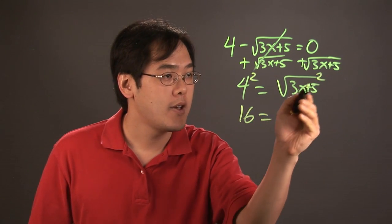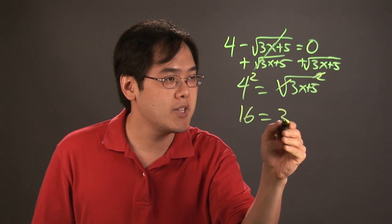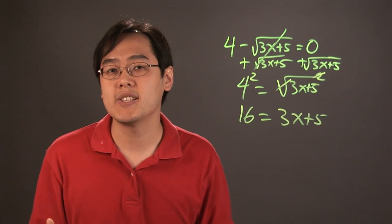4 squared is 16, square root of 3x plus 5 squared. The radical and the square cancel, you have 3x plus 5. And then what you have is a really nice equation.